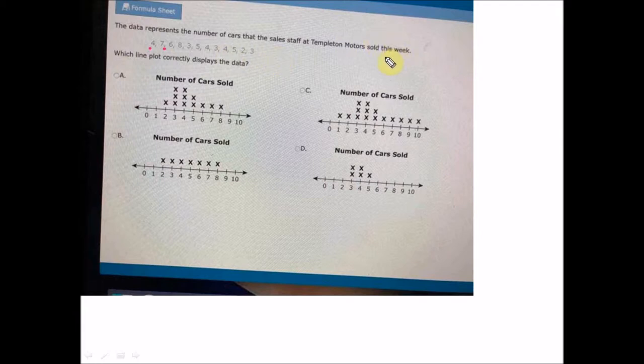The question says which line plot correctly displays the data. We have option A, B, C, and D. Let us do this together. Let me draw a straight line here. We have our line plot this way.